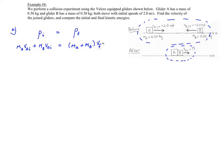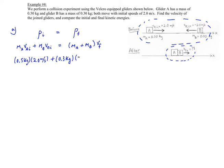Now we substitute our numbers in to find V final. Mass of A is 0.5 kilograms, velocity A initial is 2 meters per second. Mass of B is 0.3 kilograms, and the velocity of B initial is negative 2.0 meters per second. That equals 0.8 kilograms — that's 0.5 kilograms plus 0.3 kilograms — multiplied by the final velocity.